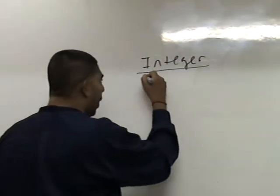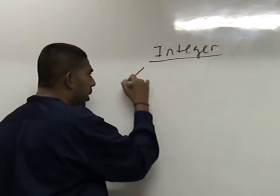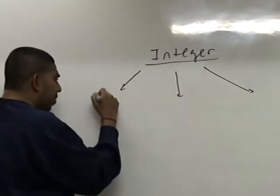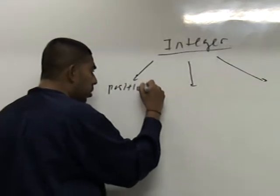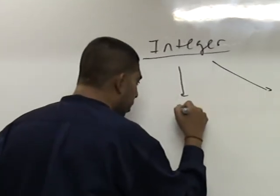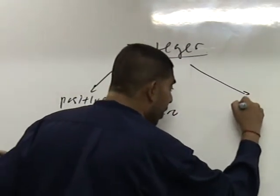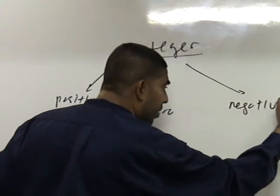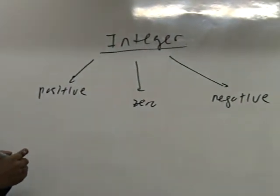Now, integers, this is broken into three. What are they? Positive integer, zero, negative integer. So there are three parts here: positive integer, zero and negative integer.